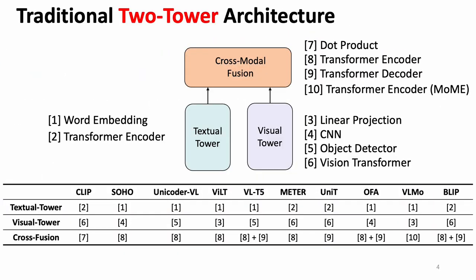From the point of view of the model architecture, recent works can be seen as the two-tower architecture, which consists of three modules: a textual tower, a visual tower, and a cross-modal fusion module on top of them. The VL models differ in the design of these three modules.